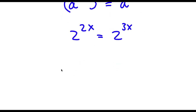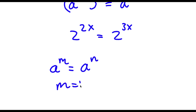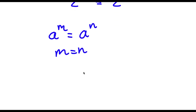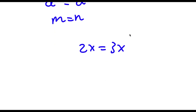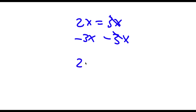Now if I have something in the form a to the power of m is equal to a to the power of n, this means that m is equal to n. So in this case, 2x is equal to 3x. Now to solve this I'm going to subtract 3x from both sides. These two cancel out and now I'm left with 2x minus 3x is equal to 0.